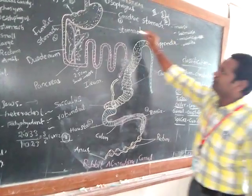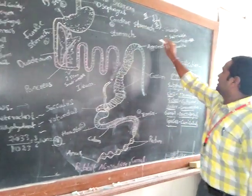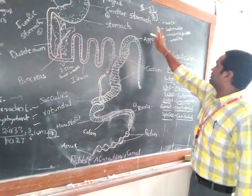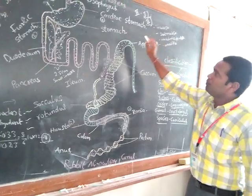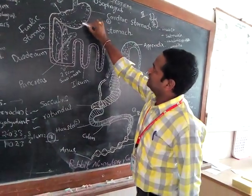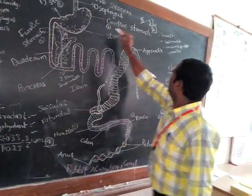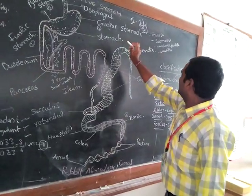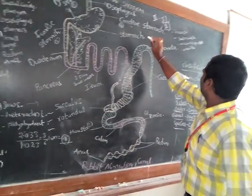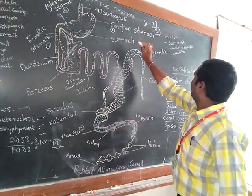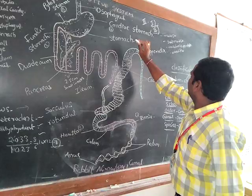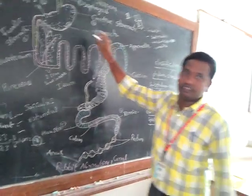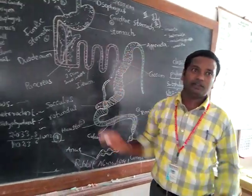The stomach has four layers: mucosa, sub-mucosa, muscularis, and serosa. These four layers are present in the stomach.